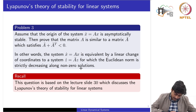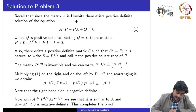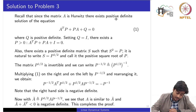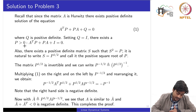Recall lecture slide 30 on Lyapunov theory for linear systems. Since A is Hurwitz, there exists a positive definite solution P to the Lyapunov equation for any positive definite Q; we select Q = I. Therefore there exists a symmetric positive definite P satisfying A^T P + PA = −I.